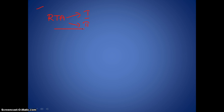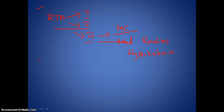Good evening friends. Today we are going to discuss an important topic from nephrology: renal tubular acidosis, conventionally divided into type 1, type 2, and type 4. Type 4 is less commonly tested but is the most common form, associated with moderate renal insufficiency and hyperkalemia. The key point to remember is that type 1 and type 2 are associated with hypokalemia, whereas type 4 is associated with hyperkalemia. So if you get a question showing metabolic acidosis with hypokalemia, always consider type 1 or type 2 as a possible diagnosis.